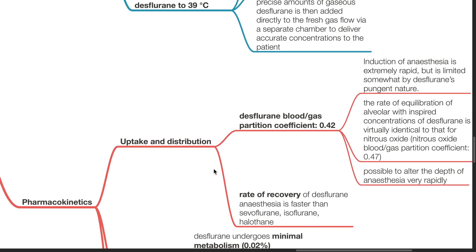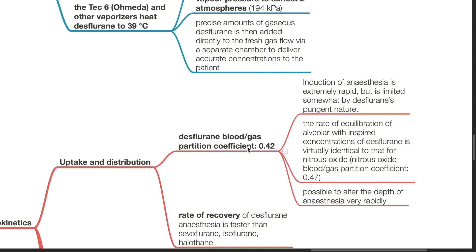Pharmacokinetics. Uptake and distribution. Desflurane has a blood gas partition coefficient of 0.42, which results in extremely rapid induction of anesthesia. However, this is limited by desflurane's pungent and airway irritant nature. The rate of equilibration of alveolar with inspired concentrations of desflurane is virtually identical to that for nitrous oxide, as nitrous oxide's blood gas partition coefficient is 0.47. Due to the low blood gas partition coefficient, it is possible to alter the depth of anesthesia very rapidly. The rate of recovery from desflurane anesthesia is faster than sevoflurane, isoflurane, or halothane.